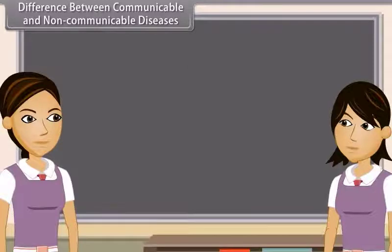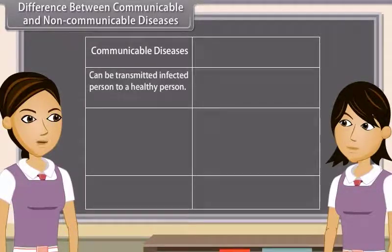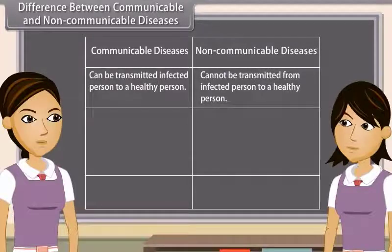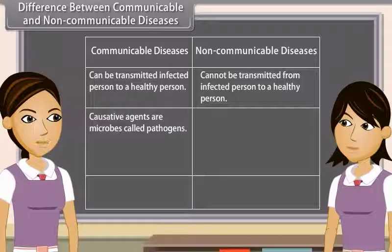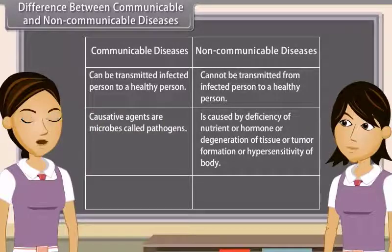Communicable diseases can be transmitted from an infected person to a healthy person, while non-communicable diseases cannot be transmitted. Communicable diseases are caused by microbes called pathogens. Non-communicable diseases are caused by deficiency of nutrient or hormone, or degeneration of tissue, or tumour formation, or hypersensitivity of the body.